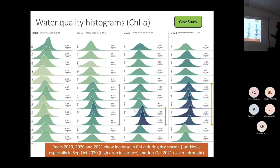September and October 2020 is when we had the huge drop in water extent across the whole basin. And the same for 2021 during the drought that started in June — we have a severe increase in chlorophyll values.